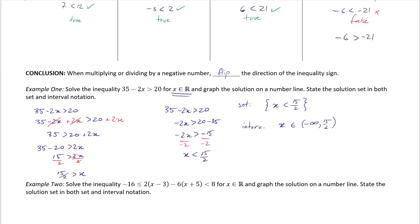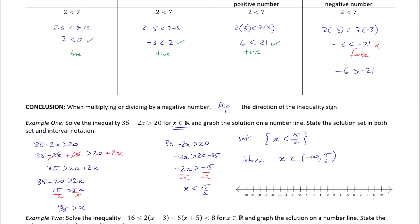The last part asks me to graph the solution set on a number line. Since x < 15/2, that's x < 7.5. I place an open circle at 7.5 because it is not included, and shade everything to the left going all the way to negative infinity.